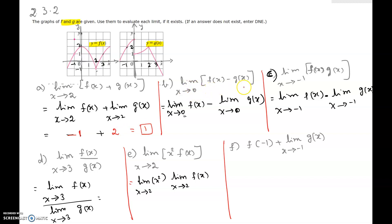Part b: limit as x approaching 0 of f(x) minus g(x). It is the limit as x approaching 0 of f(x) minus the limit as x approaching 0 of g(x). In the neighborhood of 0, f(x) is approaching 2. For g(x), to the left of 0 the y-coordinate is approaching 3, and to the right of 0 it is approaching 1. Since the left limit and right limit at 0 are not the same, this limit does not exist.